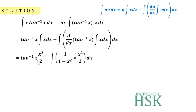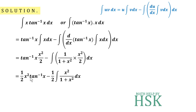We obtain: tan⁻¹(x)·(x²/2) minus the integral of [1/(1+x²)]·(x²/2) dx. Simplifying, this becomes (1/2)x²·tan⁻¹(x) minus (1/2) times the integral of x²/(1+x²) dx. Now we need to integrate this remaining term.